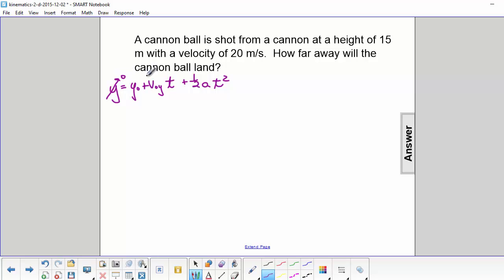It's going down to zero and the velocity in the y direction to start is also zero. So we have negative y0 equals one-half a times t squared.